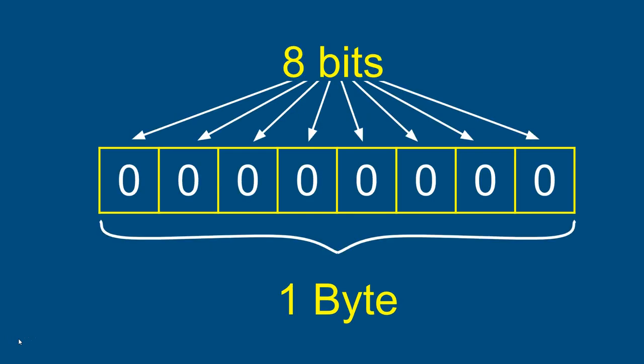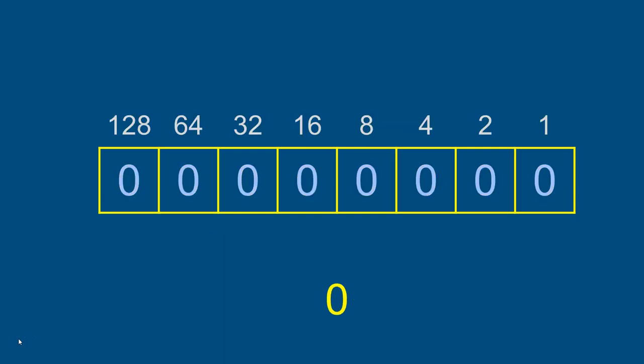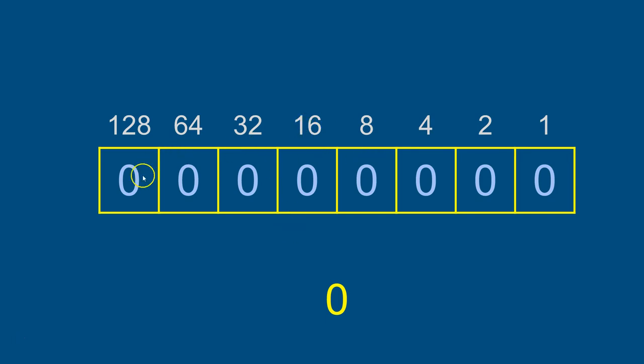In computers, everything - numbers, letters, music, videos - has to be coded down to a series of ones and zeros. That's all we can store in memory: on and off, one and zero. So how do we store different things? Let's start with numbers. With one byte - eight bits of memory - each bit has a place value: ones, twos, fours, eights, sixteens, and so on. That's binary notation.